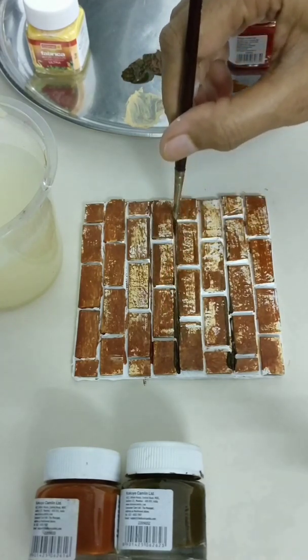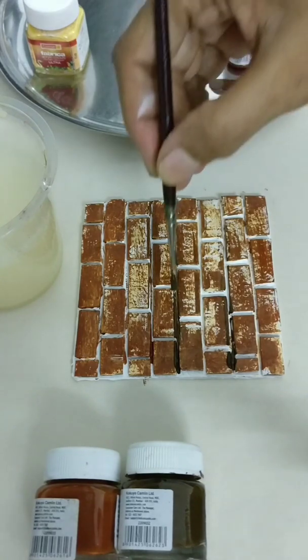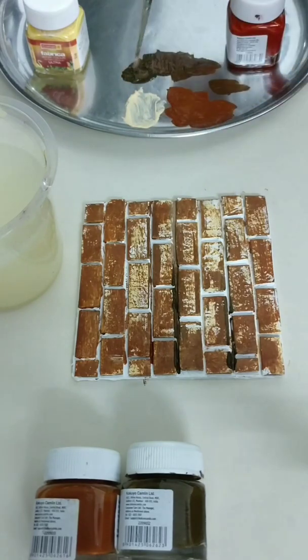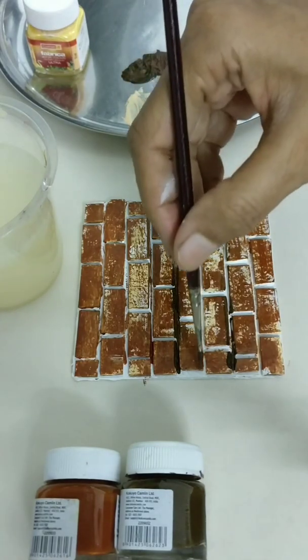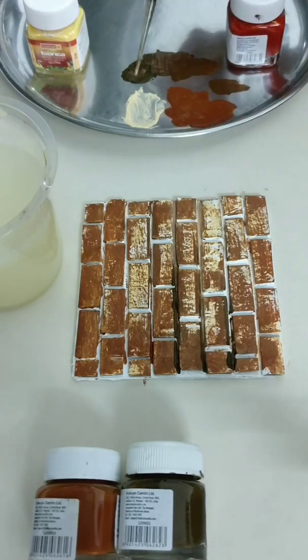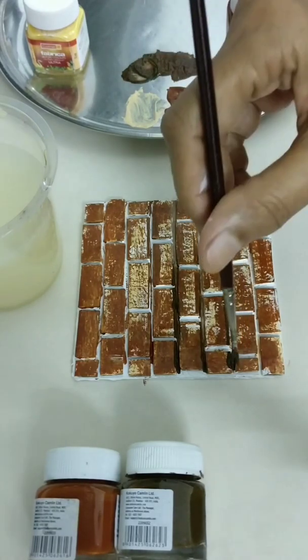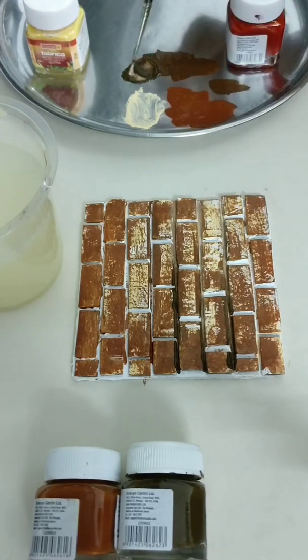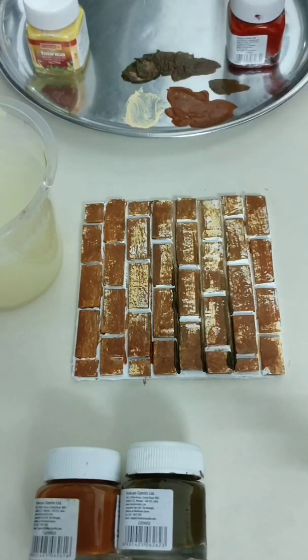And it is okay if it goes above on the bricks too. Not a problem at all. Even if the white is seen from below, bricks are never of the same colour. So it is all perfectly fine. My gesso is a little wet below so you can see the whiteness coming out.